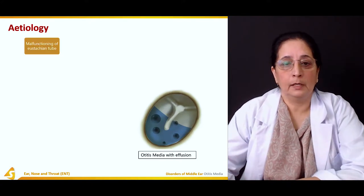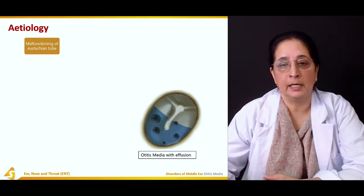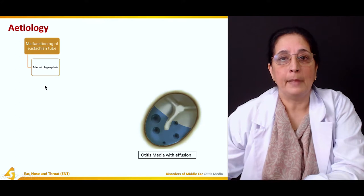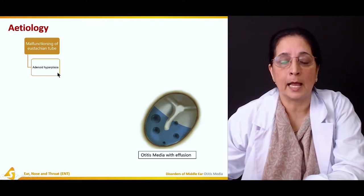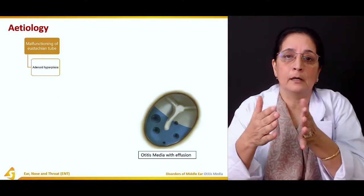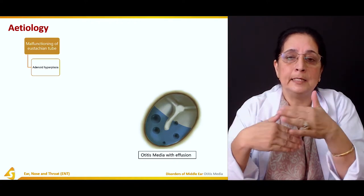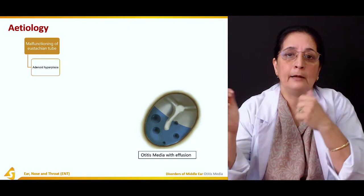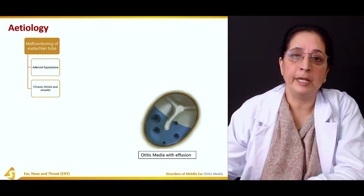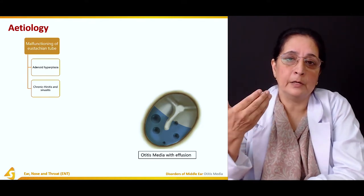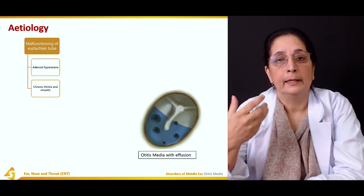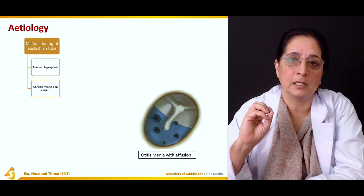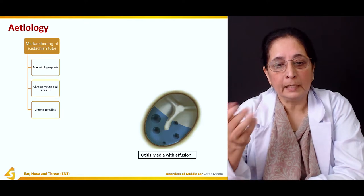The main cause of otitis media with effusion is malfunctioning of the eustachian tube. Factors include adenoid hyperplasia — the adenoids are close to the eustachian tube, and if they become enlarged they can put pressure on and obstruct the eustachian tube. Chronic rhinitis and sinusitis can also cause pressure on the eustachian tube due to increased secretions causing edema or blockage.